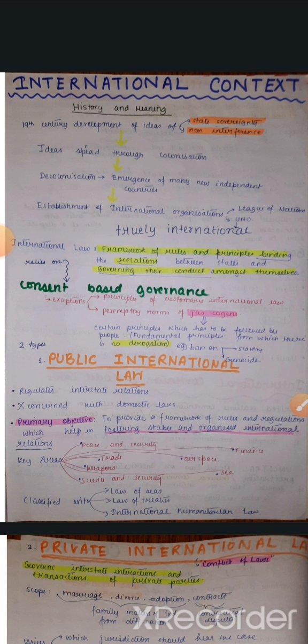There is one very important feature of international law: it depends upon consent. So, agar ek desh agree kare ki ye law hum pe applicable hai, tabhi the law is binding on them. Otherwise, international laws are not binding.